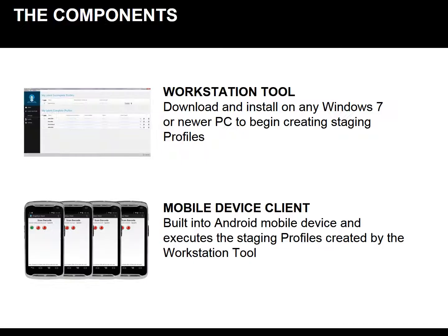How it works. There are two components to the StageNow solution. First of all, the workstation tool, and secondly, the device client. The workstation tool can be downloaded and installed on any Windows 7 or newer PC. Here you could create your staging profiles using wizards and output them into barcodes or NFC tags. The mobile device client comes installed on Android Zebra KitKat devices out of the box and allows you to scan the barcodes and NFC tags in order to stage your device.